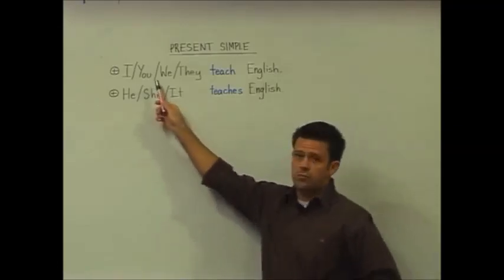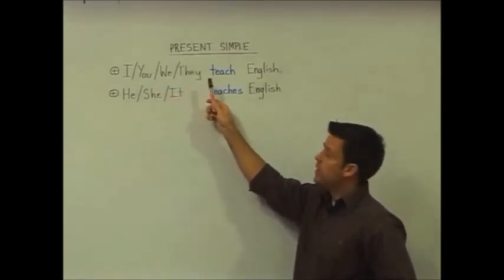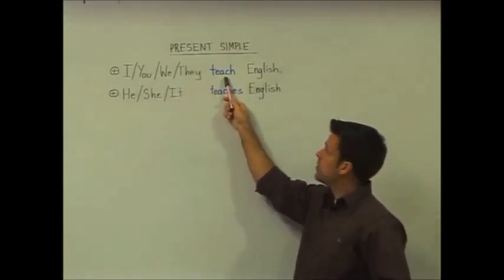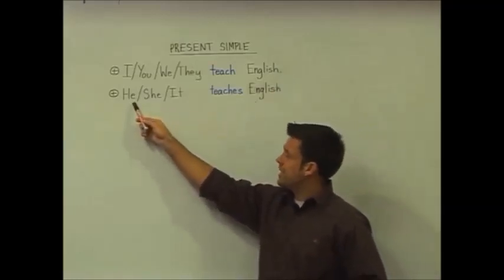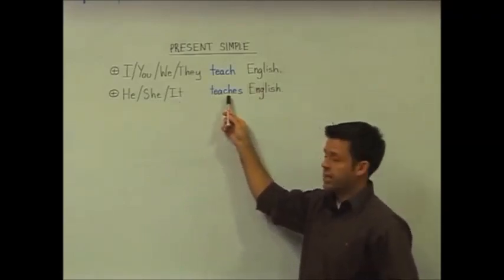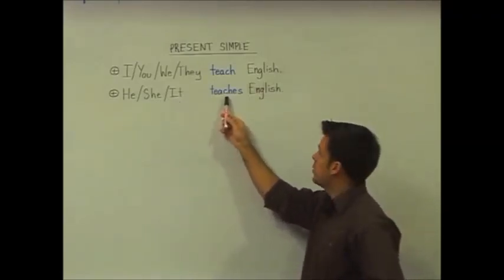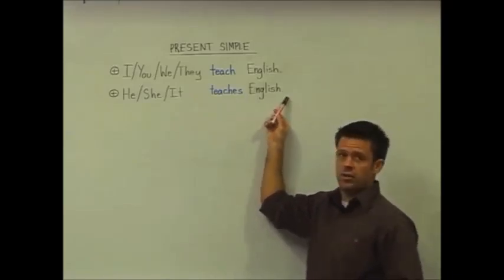Here we've got our subjects: I, you, we, they, and the base form of the verb, followed by the rest of our sentence. Here for the he, she, and it subjects, we have to conjugate our verb, and in this case we've added an es for teaches, followed by the rest of our sentence.